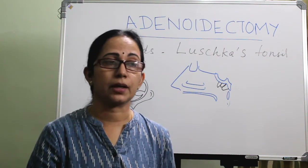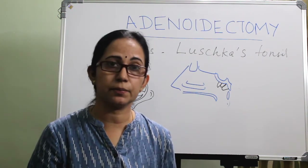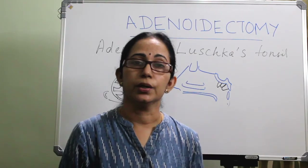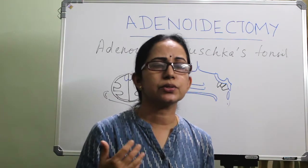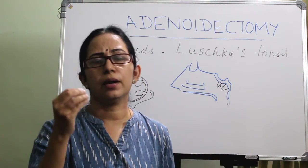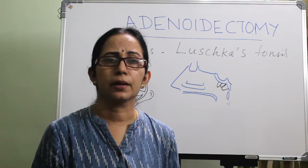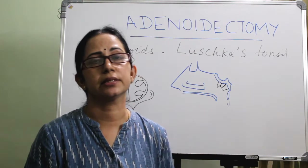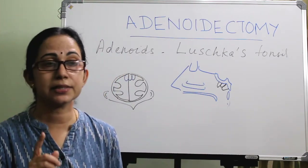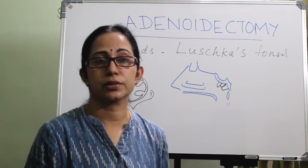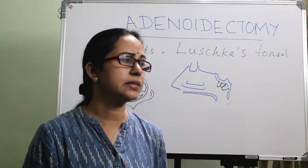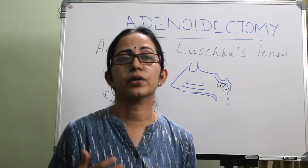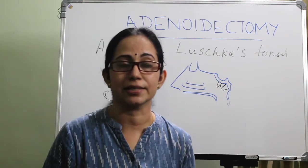So that is the natural course of adenoids — relatively absent at birth, then enlarging, and disappearing by age 18 to 20 years. Usually there will be minimal enlargement with minimum symptoms; it is self-limiting and disappears by itself. But in some cases it causes problems, and we will not do adenoidectomy for all cases — only if it causes severe problems. So what are the indications?